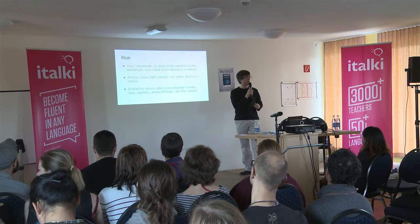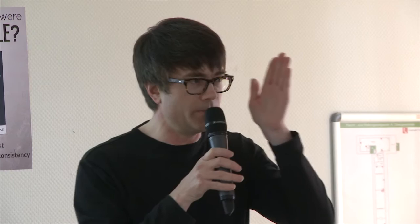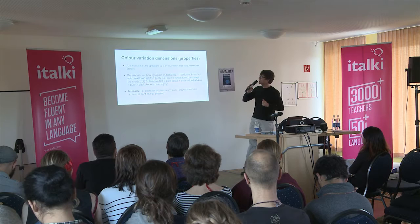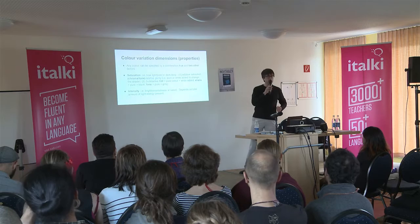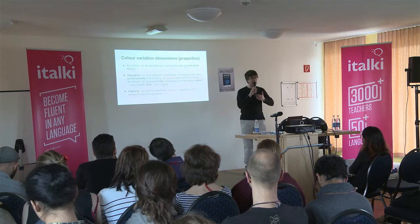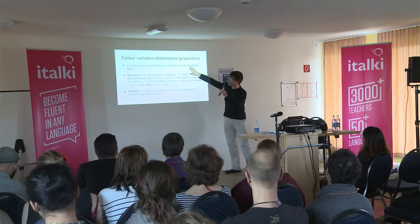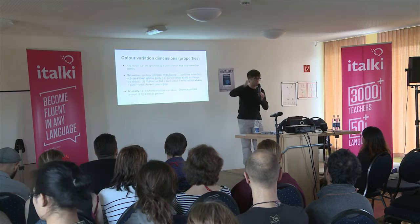Hue is what we call the individual colors of the rainbow — the individual wavelengths. That's the pure color, or mixture of pure colors along the rainbow. All colors can be described as a mixture of three properties: first, the hue — the position along the rainbow; then saturation — basically how light, pale, deep, or dark the color actually is; and then intensity — to do with the energy in the color, the radiation. So it's brightness or dullness.